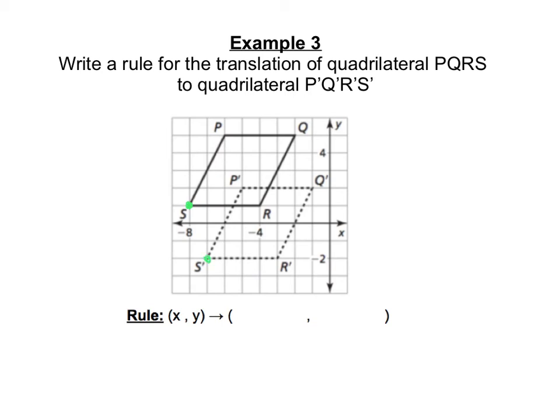So I can see that to move from S to S', the horizontal component, it moves to the right, 1. Vertical component, it's moving down, 3.